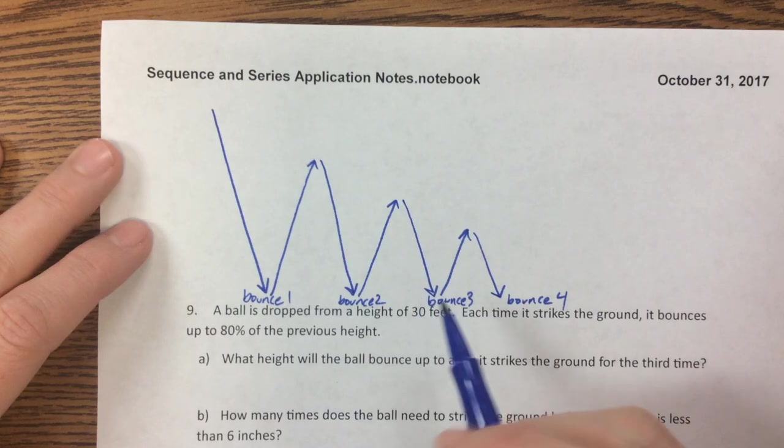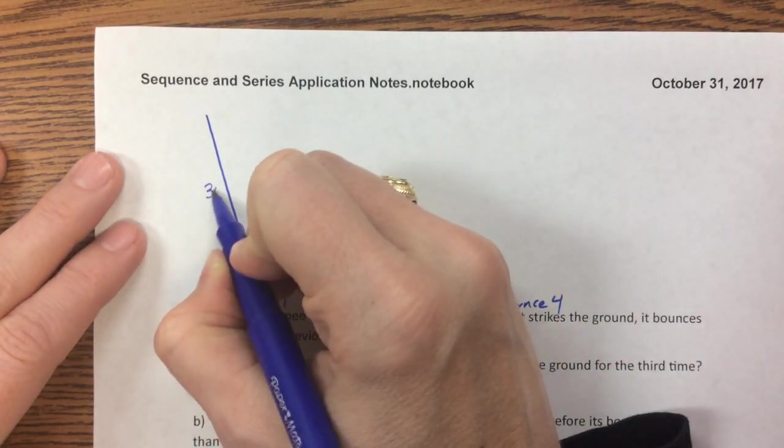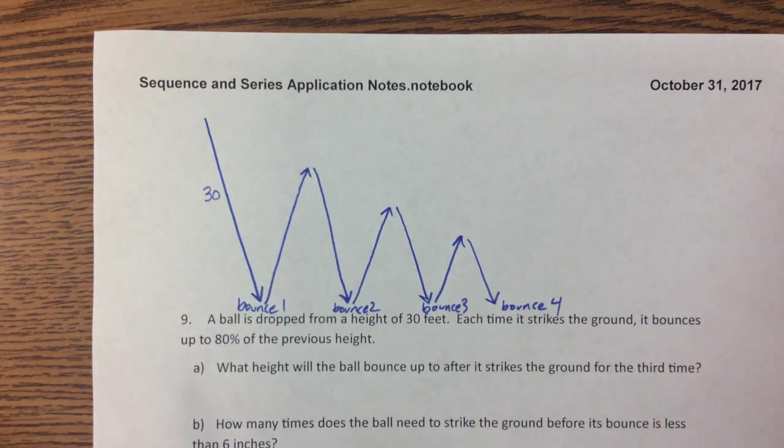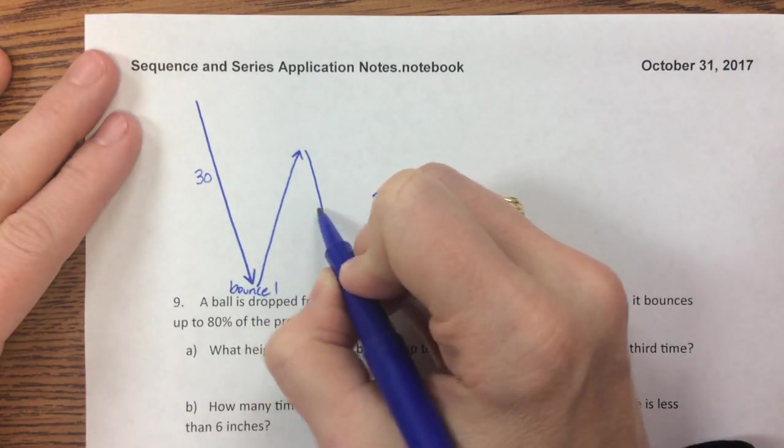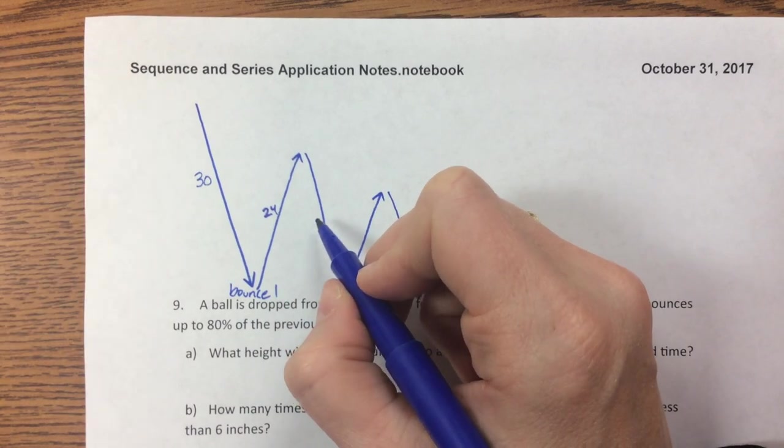The first fall was 30 feet and then the next one is 80% of that, so that's 24 feet. So this one's 24 and this one is also 24.